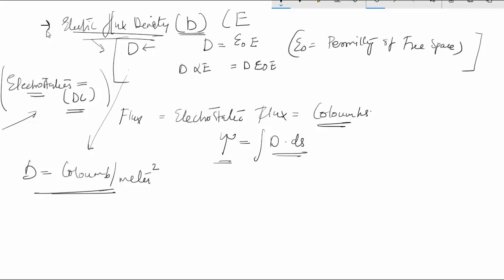The electric field intensity is E, which has units of Farads per coulomb or Newton per coulomb. To be specific, E is in Newtons per coulomb, while D, the electric flux density, is in coulombs per meter squared.